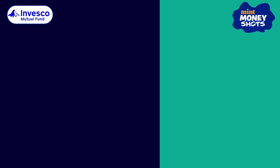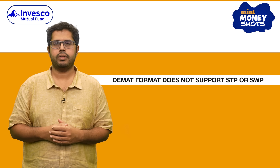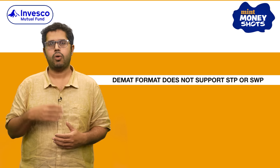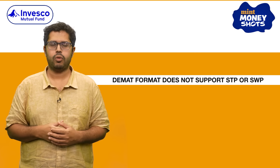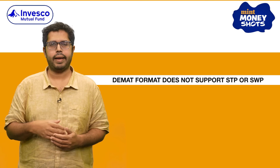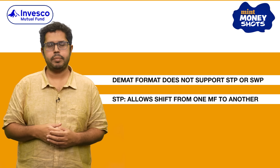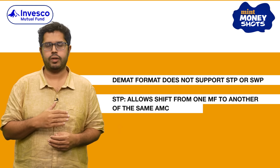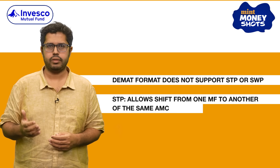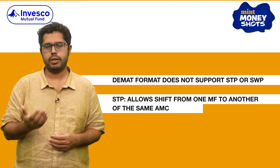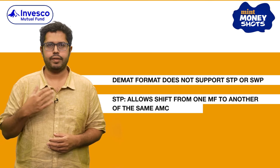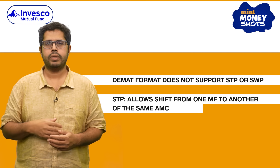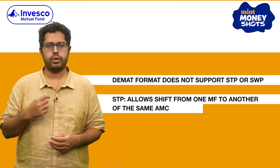The DMAT format also does not support Systematic Transfer Plans or STPs or Systematic Withdrawal Plans or SWPs. STP allows you to systematically shift from one mutual fund to another — for example, from XYZ Liquid Fund to XYZ Mid-Cap Fund without redeeming your units.